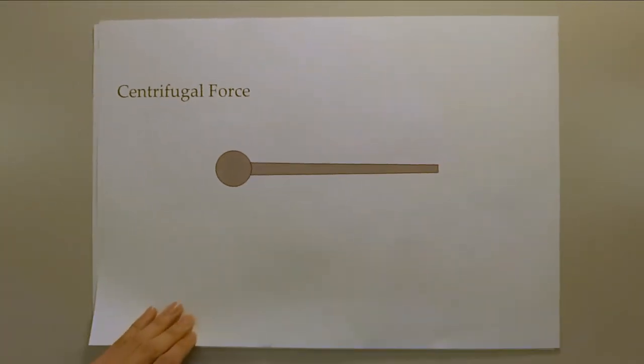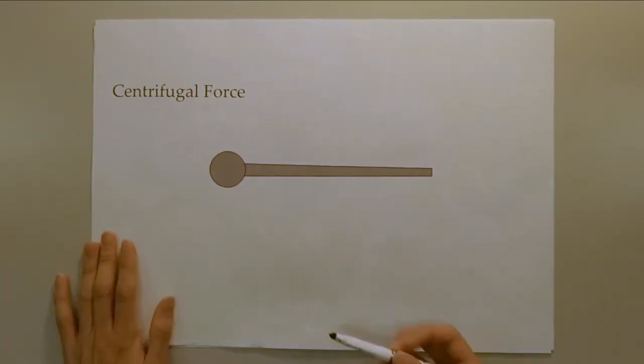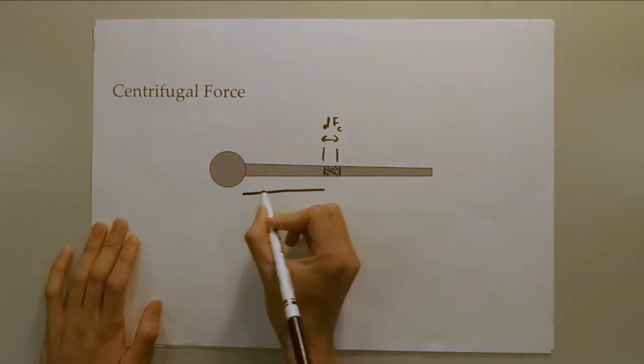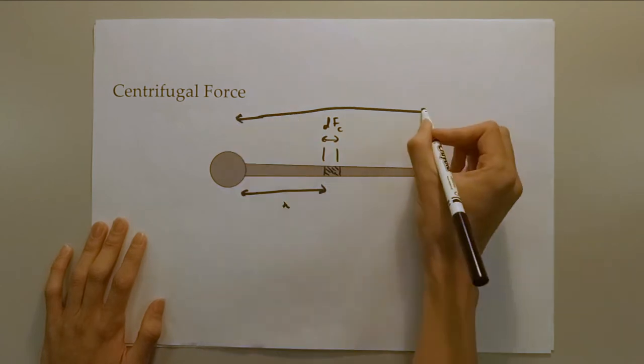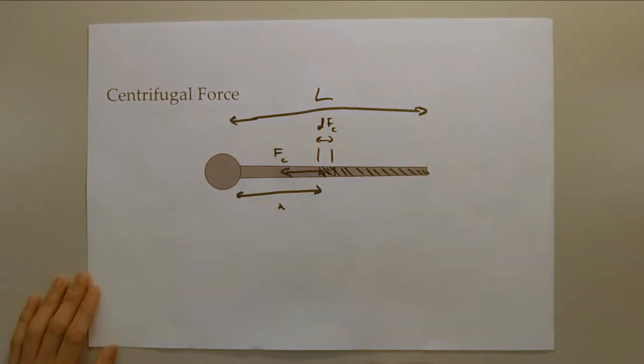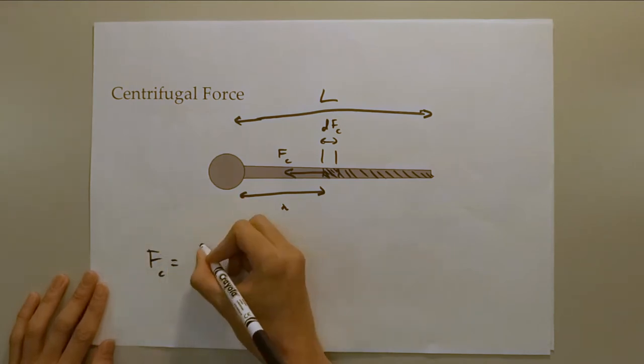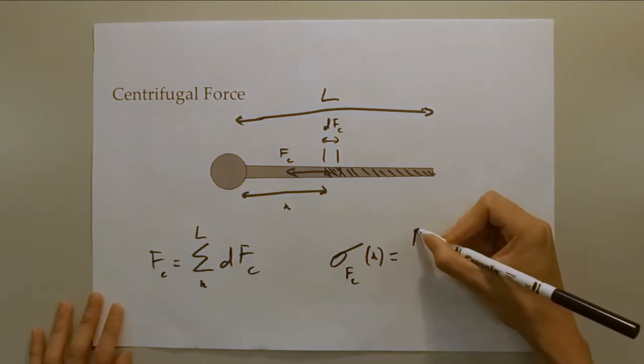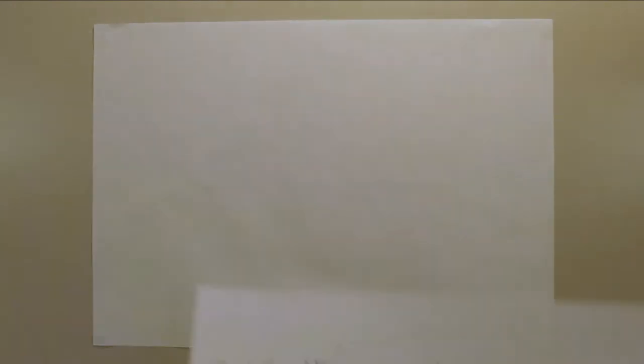To ensure that our turbine blade will not fail during testing and operation, a detailed structural analysis was required. Using the blade sections that were split earlier, we first calculated the stress due to centrifugal force along the blade section. We first calculated the force at a certain section of the blade, and then to get the centrifugal force at a specific radius of the blade, the force is summed towards the root of the blade.